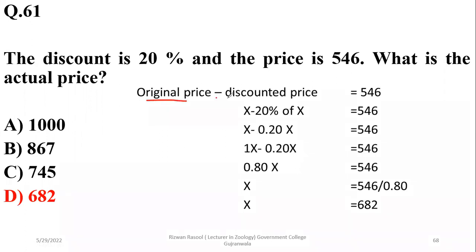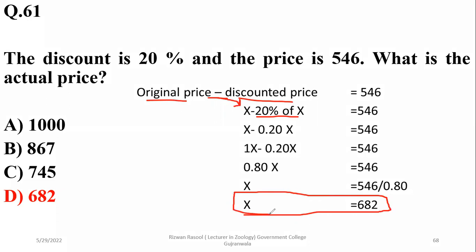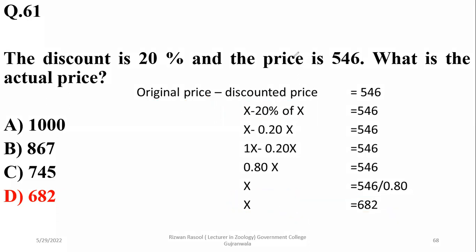The solution: original price minus discounted price equals 546. Let x be the original price, so 20% of x is the discounted amount. x − 0.20x = 0.80x. Therefore x = 546 ÷ 0.80, which equals approximately 682. The right option was delta.